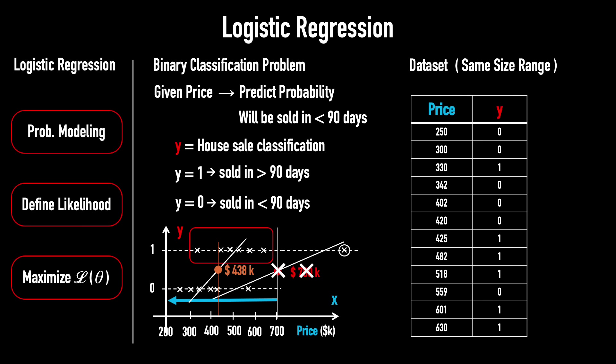So, the straight line doesn't work. We need to transform that straight line into a curved shape, one that lies between 0 and 1, asymptotes to 0 on the left, asymptotes to 1 on the right, and equals 0.5 at the mean.